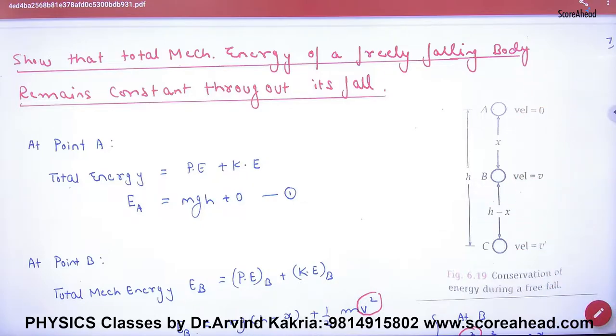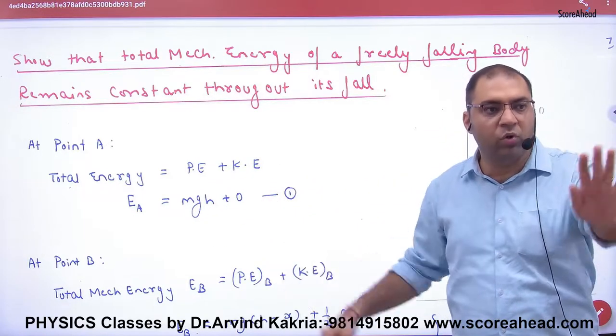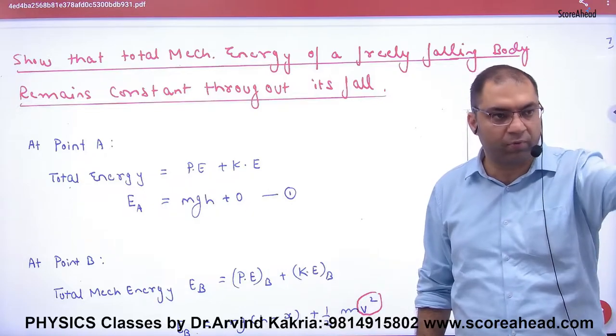It fell down to the ground from h height. When it was at point A, what was the total energy? The potential was mgh, the kinetic was 0. So the total energy is mgh. Point number 1 clear.